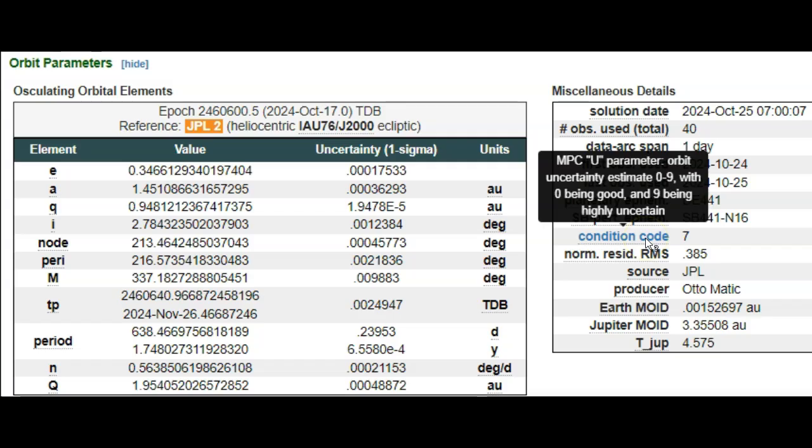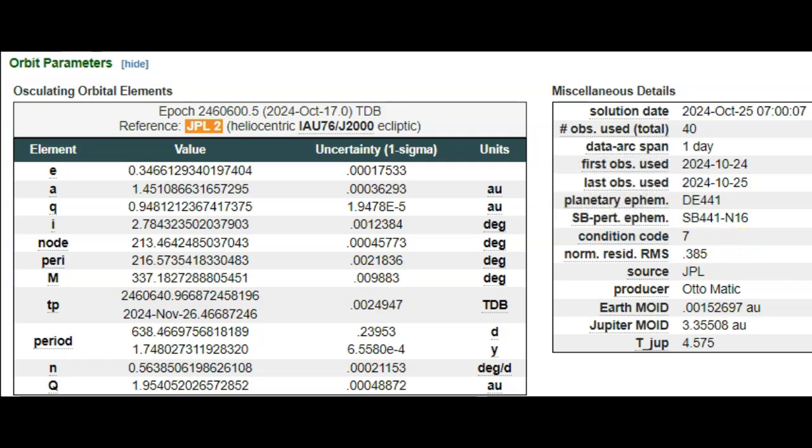Our condition code is a little higher than the other rock we looked at that will pass this morning. Early here we have a condition code of seven, meaning they're fairly uncertain where this rock is headed. Nine being completely or highly uncertain, and zero meaning they know exactly where the rock is headed. This also tells you they don't know exactly how large the rock is.